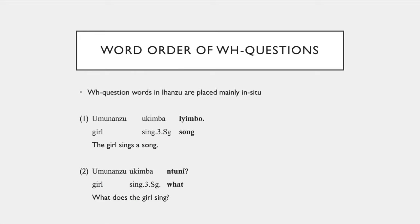Now for the word order of WH questions: Ihanzu is a WH in situ language. For example, if we have the sentence 'umunansu ukimba limbo' — 'the girl sings the song' — you would ask 'what does the girl sing?' just by saying 'umunansu ukimba ntuni'. So the girl sings what, basically from the word order. The rest of the sentence stays grammatically the same.